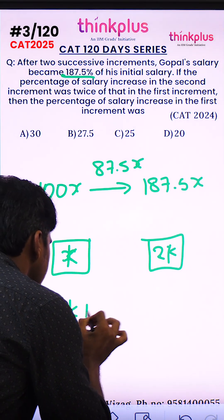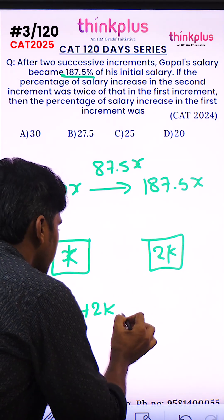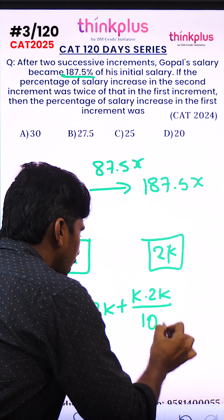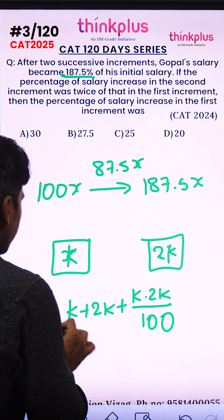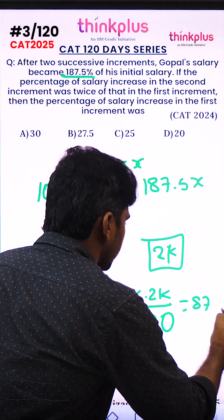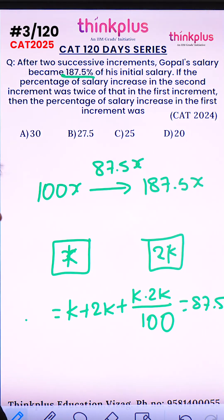The effective increment is k plus 2k plus k into 2k by 100, which equals 87.5. This will make a quadratic equation, but instead of solving that, let's just simply substitute the options.